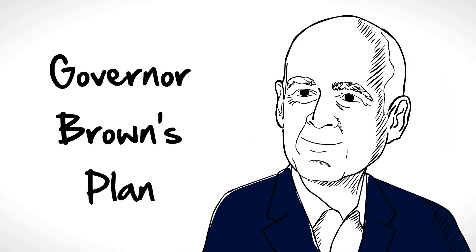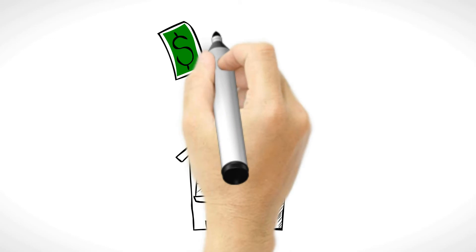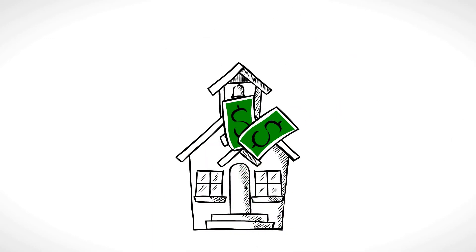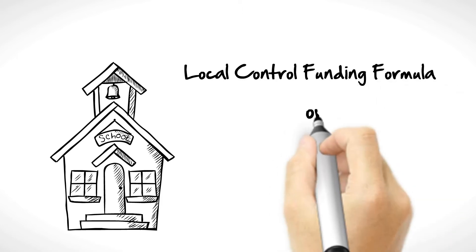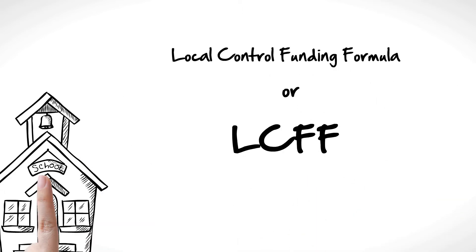The governor has a plan to fix these funding problems. He wants to improve the way we fund schools. The plan is called Local Control Funding Formula, or LCFF. The plan does the following.